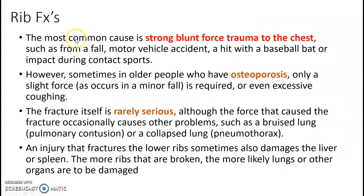Some things to know about ribs: the most common cause is strong blunt force trauma to the chest — a fall, an MVA, hit with a bat, impact. Your elderly patients who have osteoporosis can break a rib from something as minor as coughing. The fracture itself is rarely serious, but the force can cause other problems: a bruised lung, a collapsed lung from pneumothorax. Injury to the lower ribs can also damage the liver or spleen. The more ribs that are broken, the more likely the lungs or other organs will be damaged.